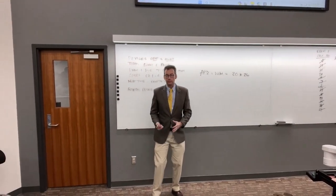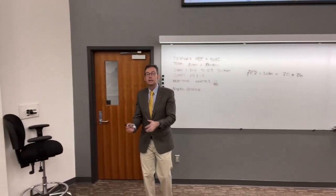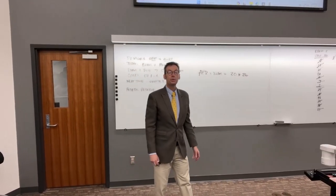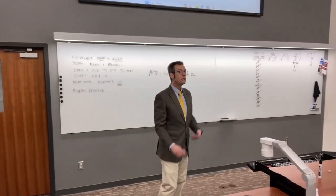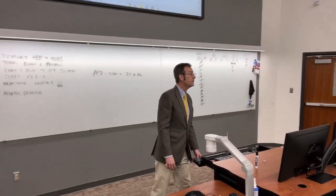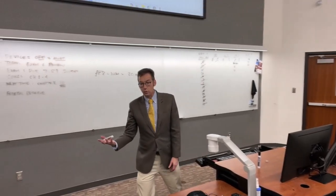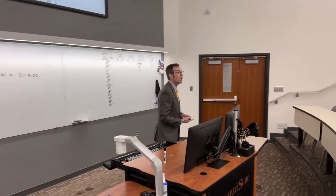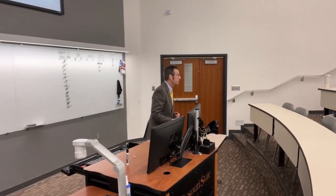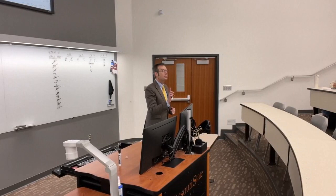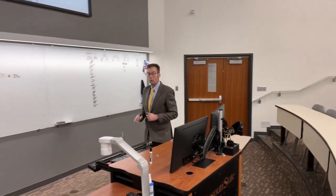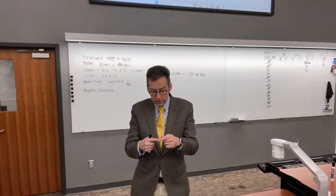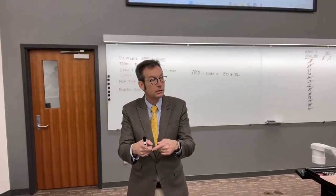To summarize: find the nominal by taking the sub-period rate times the number of sub-periods per year. How did I know it was 26? Because it's a two-week period and there are 52 weeks in the year. APR is 20% × 26 = 520%.